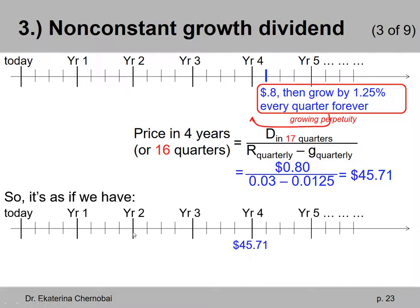And now we can proceed to step number two, just a simple discounting of $45.71 back to year zero. So that's how we would find the price in year zero, today's price per share. So it's like chapter five, very basic present value of a single cash flow. So we take $45.71 and divide it by one plus the quarterly discount rate.